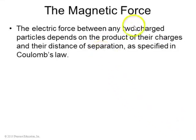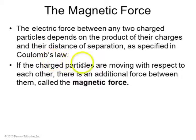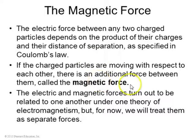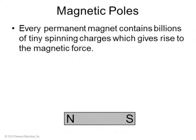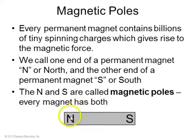If you have two charged particles separated by some distance, there's an electric force between them. But if one or more of these charges are moving, you also get a magnetic force between them. This is all part of the theory of electromagnetism — the electric force and the magnetic force are two different forces in physics, and they both exist together if you have charged particles that are moving. A magnet like a lodestone must have moving charges within it — billions of tiny moving charges going in circular paths give rise to this magnetic force. One end is called a north pole and the other a south pole, and every magnet has both of these.